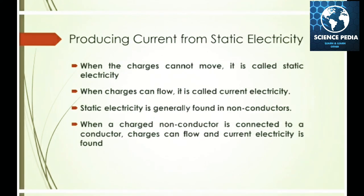Producing current from static electricity: when charge cannot move, it is called static electricity. When charge can flow, it is called current electricity. Static electricity is generally found in non-conductors. When a charged non-conductor is connected to a conductor, charge can flow and current electricity is produced.